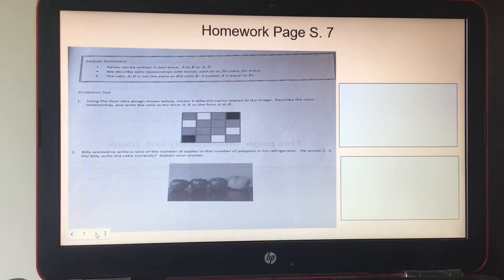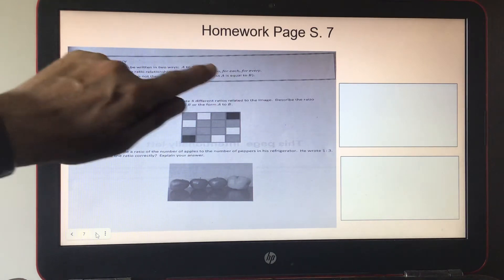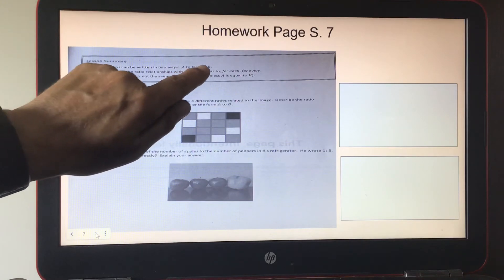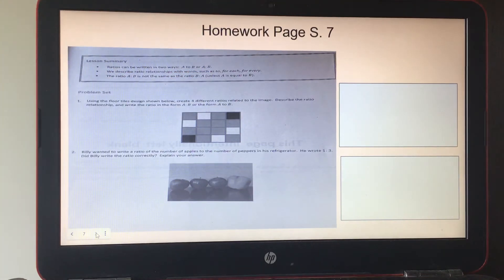Homework was page S7 and it has the lesson summary on top. Ratios can be written in two ways, A to B or A colon B. We describe ratio relationships with words such as to, for each, for every. And the ratio A to B is not the same as the ratio B to A unless A is equal to B.